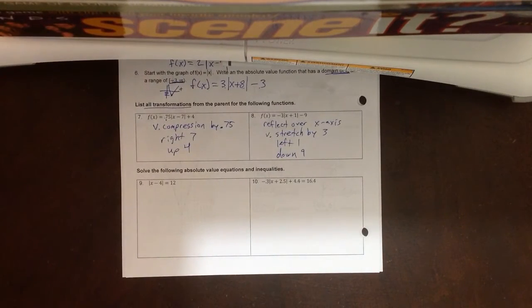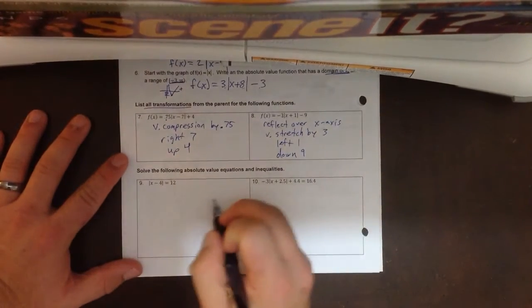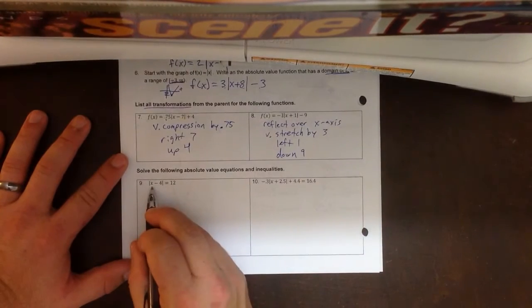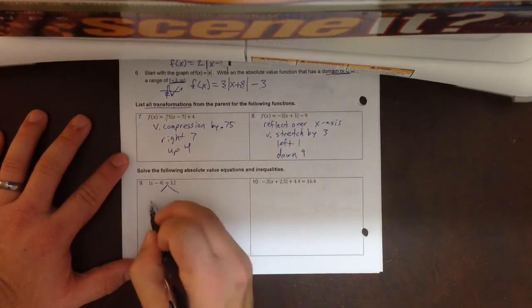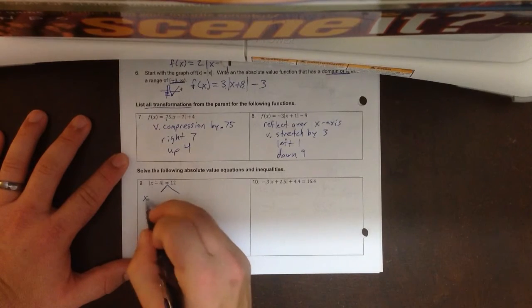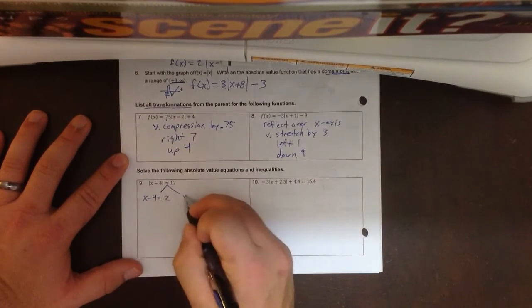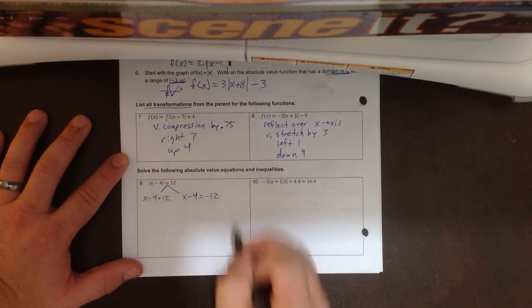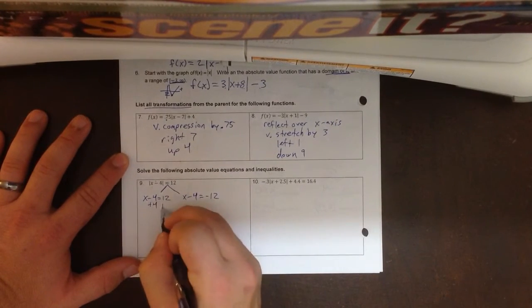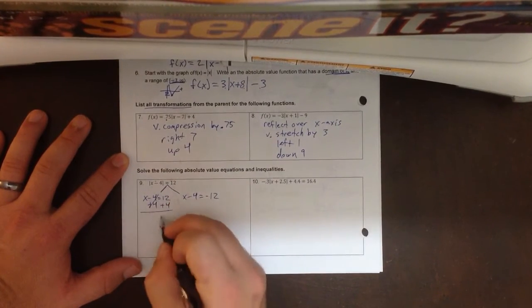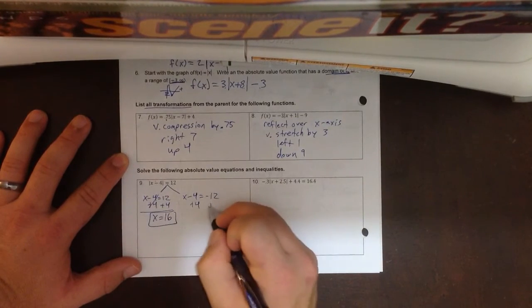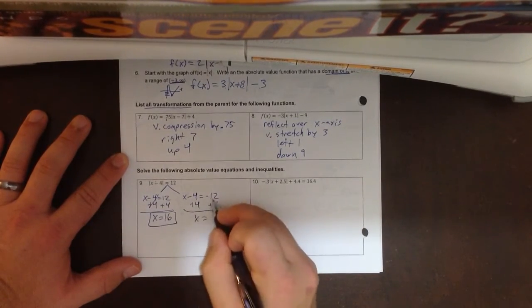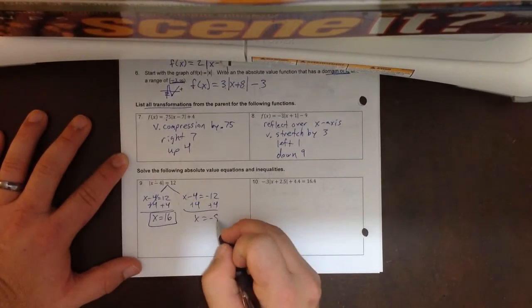Alright, number 9, we get into solving. Remember, our first step is isolate the absolute value. So on this one, the absolute value is already isolated, then we branch it. So we isolate, then we branch. x minus 4 equals 12, x minus 4 equals negative 12, and we solve. So I'm going to add 4 on both sides to get rid of that 4. x equals 16. That's one answer. Add 4 over here. Negative 12 plus 4 is going to be negative 8.